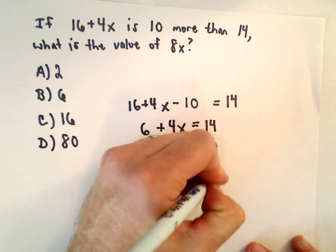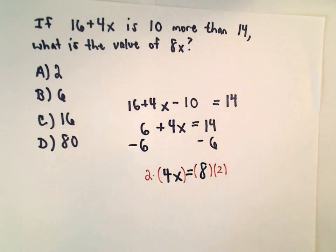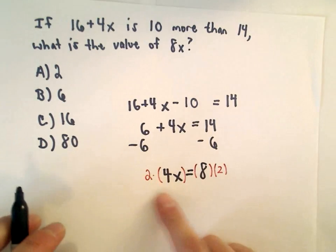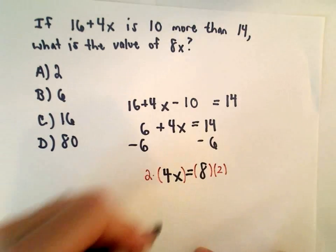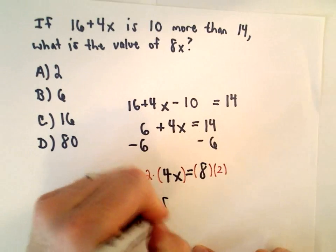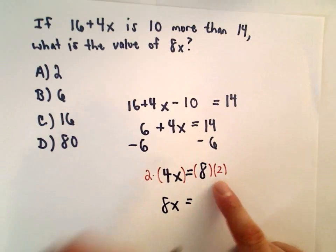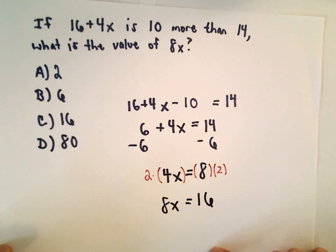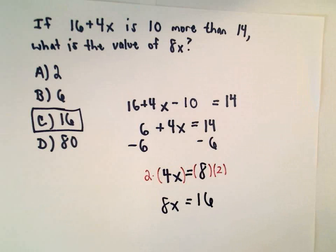I'm going to multiply the right side also by 2, and I'm multiplying the left side by 2 because I recognize that 2 times 4x is going to give me 8x, and 8 multiplied by 2 is going to give me 16. So the answer choice of C, 16, is going to be the correct answer.